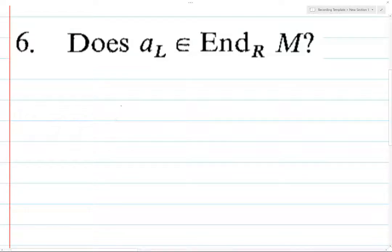Anyways, let's do this problem. Yes. Because End_R M is just the endomorphisms of M endowed with the ring structure, and a_L is an endomorphism of M. So there you go, that's it.